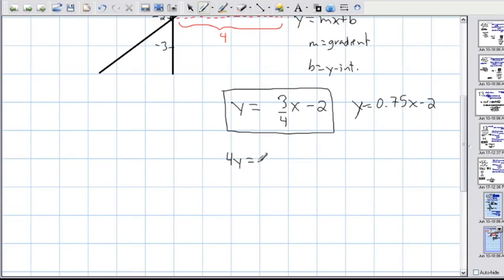That would give you 4y equals 3x, because the 4 here would disappear on the right side. And if you multiply the negative 2 by 4 you'd also get negative 8. So this is also the same. This equation or this equation or this equation are all correct.